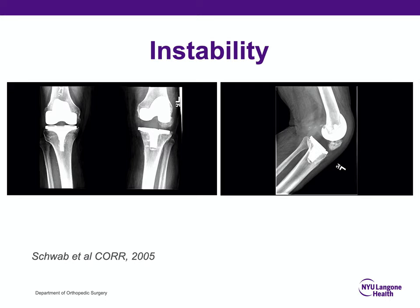Instability is becoming a more frequent cause of revision and is now one of the top causes. You should look for any sign, particularly in a dynamic view, but even a static view of asymmetrical widening of the joint, as this can suggest instability.